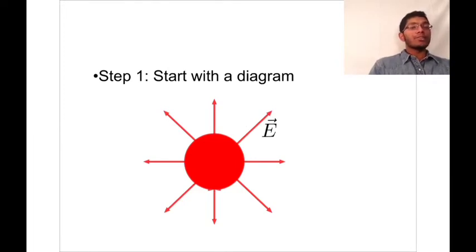The next thing we need to do is to pick an appropriate Gaussian surface, one that's symmetric with this charge works best. And intuitively, the one you'd want to pick is the one that's symmetrical with this, which would be a sphere. Let's see what that looks like.